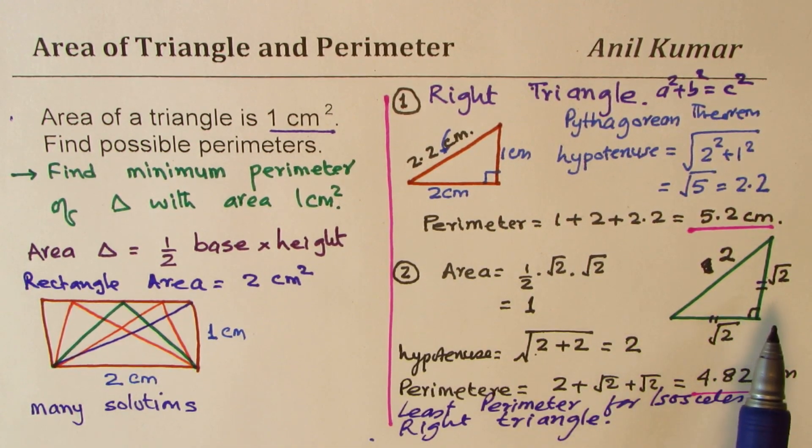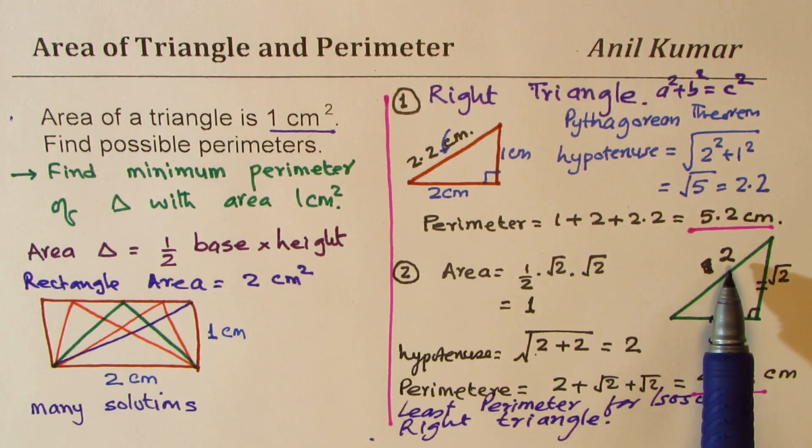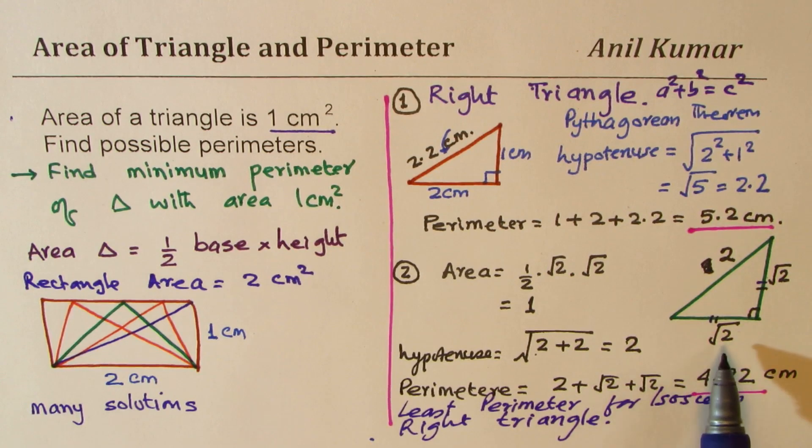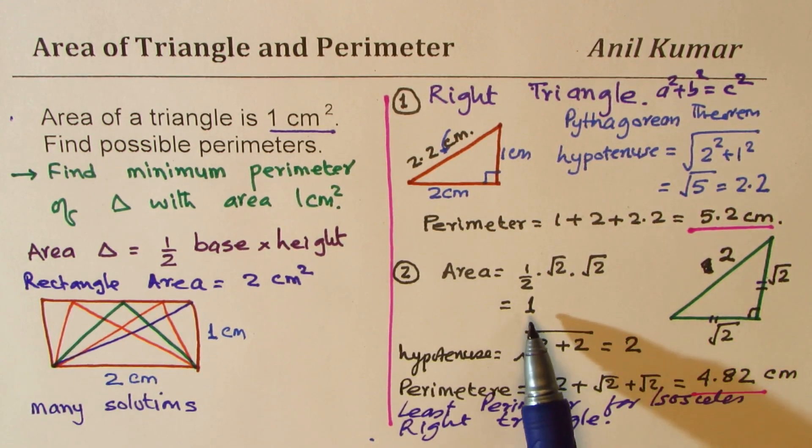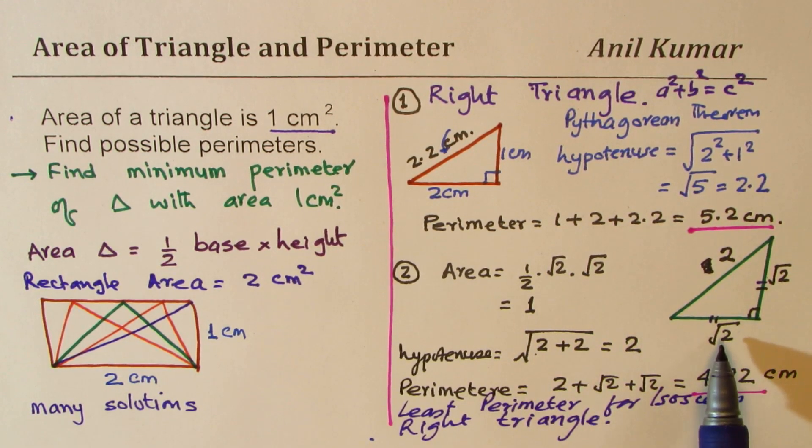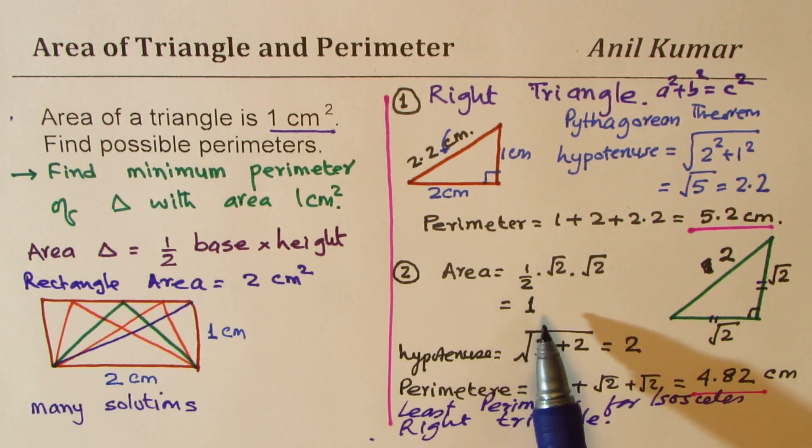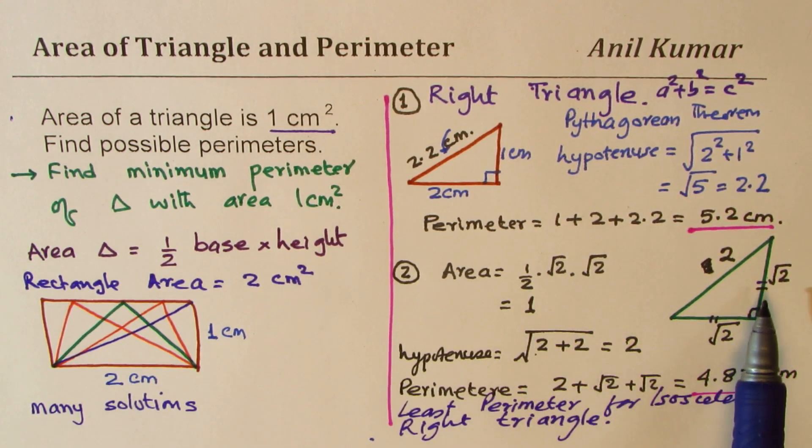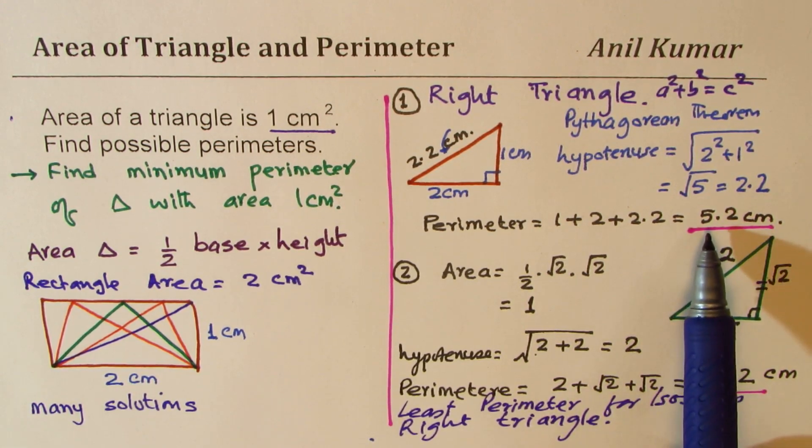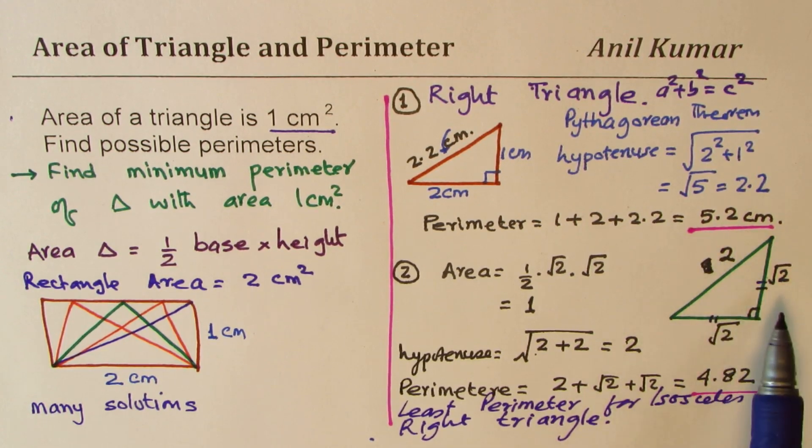We tried some other triangles. This one here, which had hypotenuse of 2 centimeters and the legs of square root 2 will also give us area of 1. Square root 2 times square root 2 is 2 divided by 2 is 1. In this case, we calculated the perimeter to be 4.8, which is much lower than the previous one. In fact, isosceles right triangle will give you minimum perimeter. So that is our learning from this particular video.